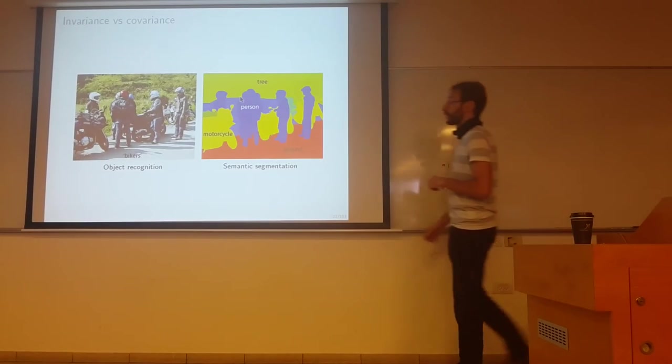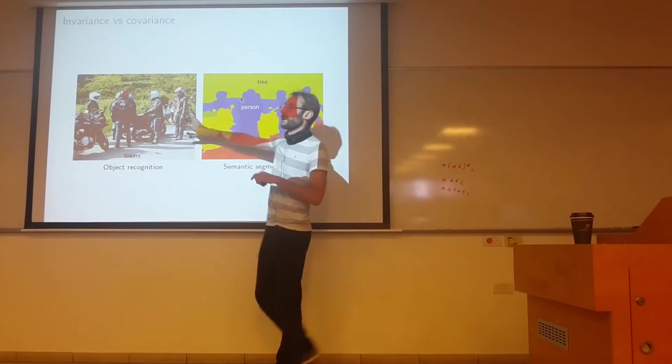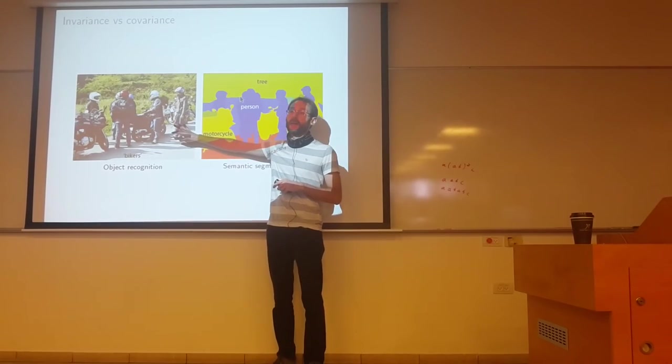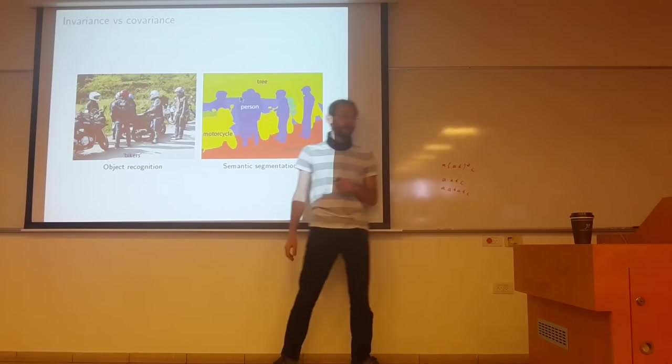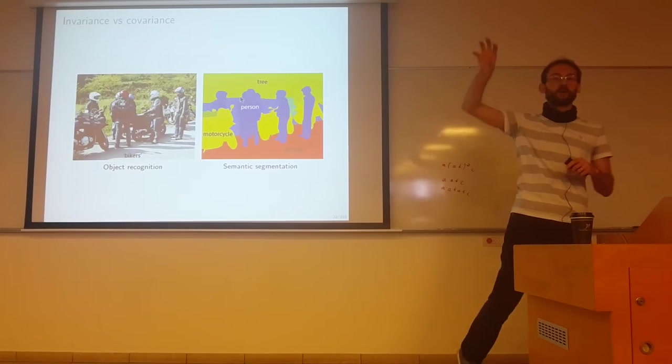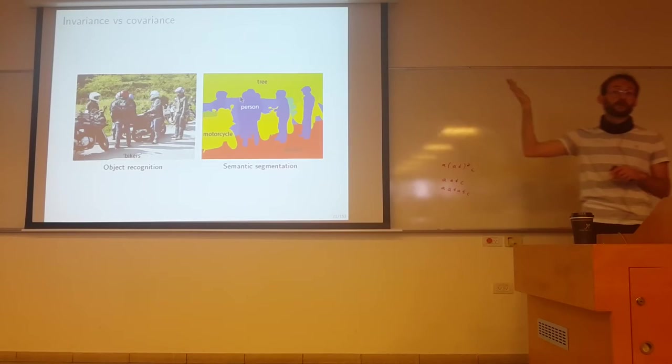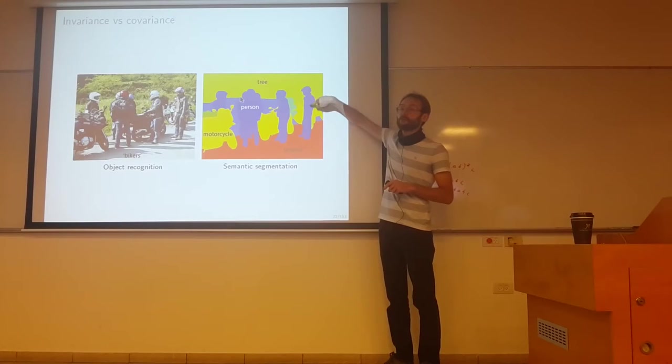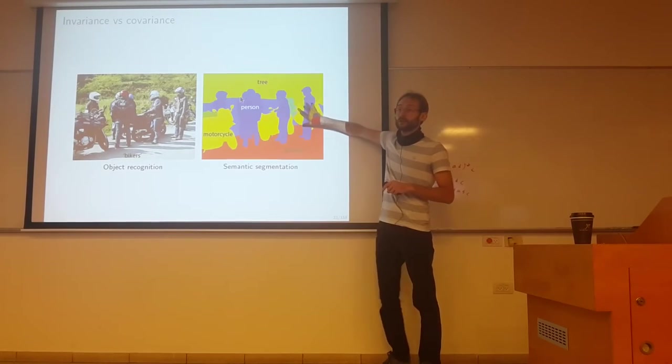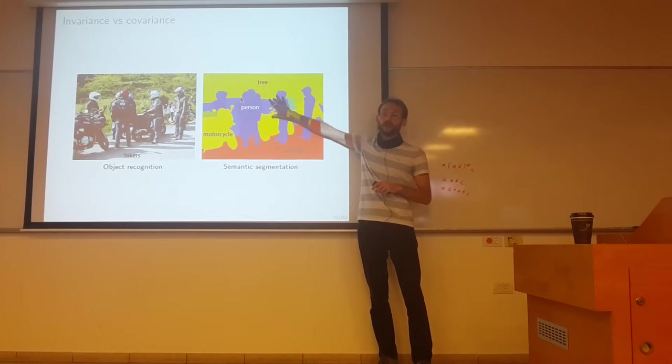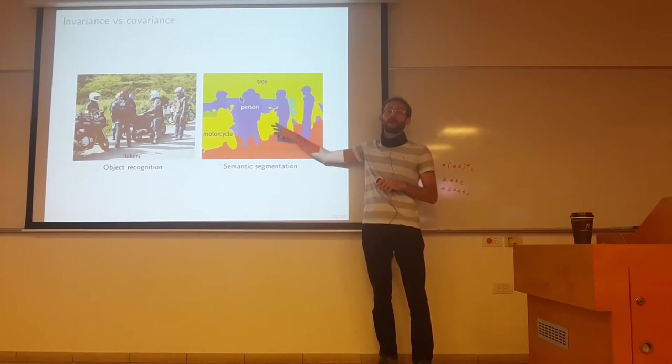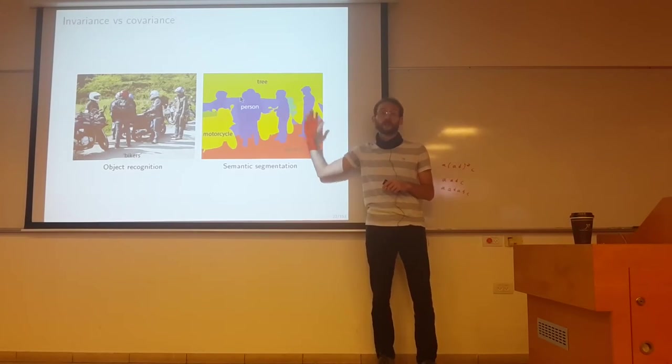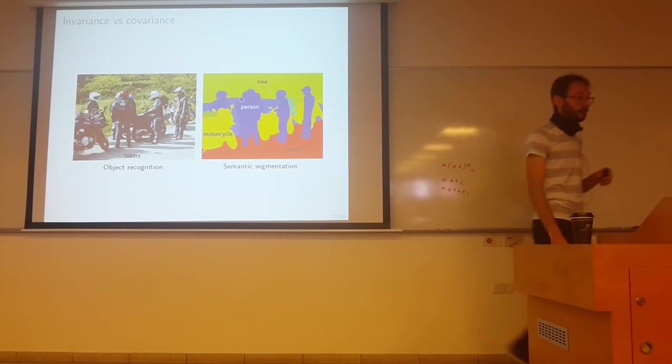This is an example of object recognition. I'm looking at this picture and want to say these are bikers. Why do I need invariance? No matter where I see a bike or person in the picture, I want to still produce the same label. That's invariance. Here's semantic segmentation - I'm labeling each pixel. If I see a person translated to a different position, I want the same pixels to be labeled in the same way, just translated. The labels will be translated to a different position - that's covariance.